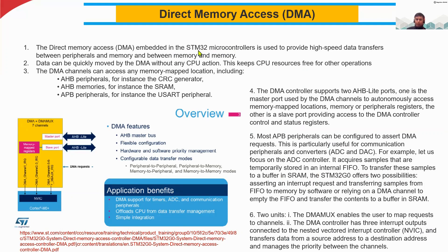Direct Memory Access, DMA, is embedded in STM32 microcontrollers. In any version you can see DMA — it's used to provide high-speed data transfers between peripherals and memory, or between memory and memory. Data can be quickly moved by the DMA without any CPU action, so you do not really need to use the CPU resource. This keeps the CPU resource free for other operations such as data computations.